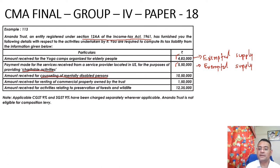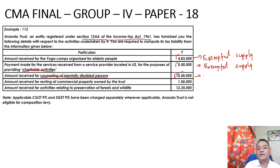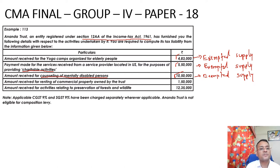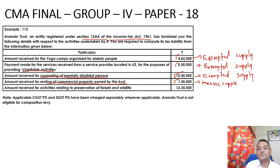Amount received for counselling of mentally disabled persons - anything relating to counselling service for mentally disabled persons is again an exempted supply under GST, and no GST will be charged on it. Amount received for renting of commercial property owned by the trust - please note that any service which is commercial in nature by the trust is always a taxable supply, so this will be a taxable supply.